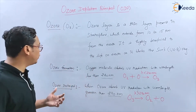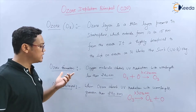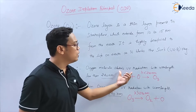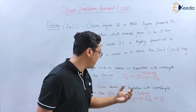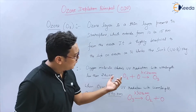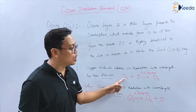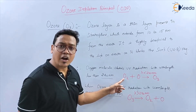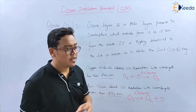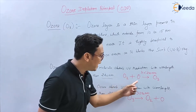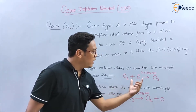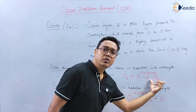How is ozone formed? Oxygen molecules absorb UV radiation at wavelengths less than 240 nanometers. When oxygen molecules absorb ultraviolet radiation at less than 240 nanometers, they split and then combine with another oxygen atom to form ozone (O3).